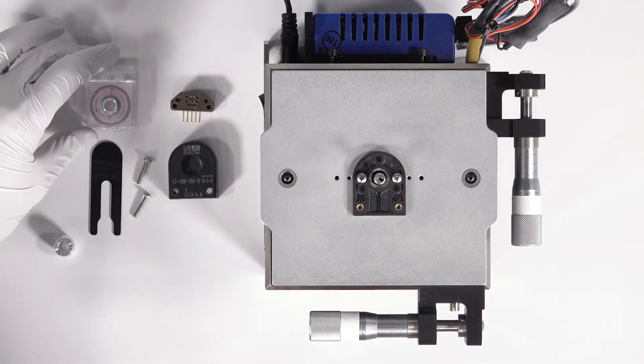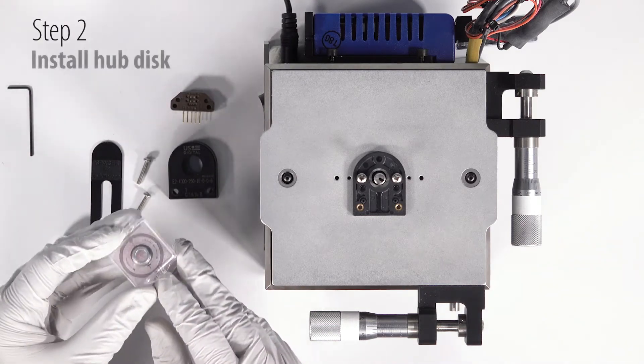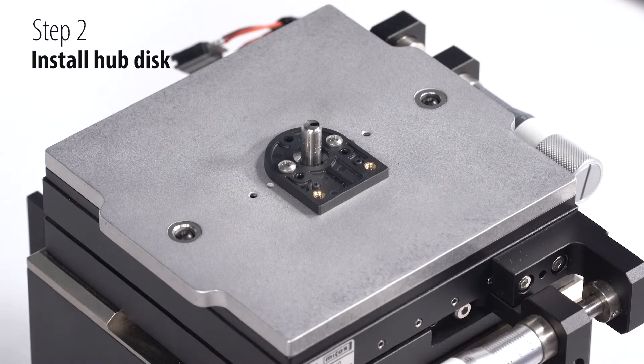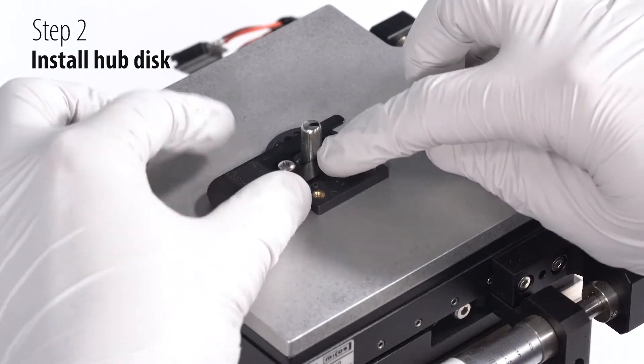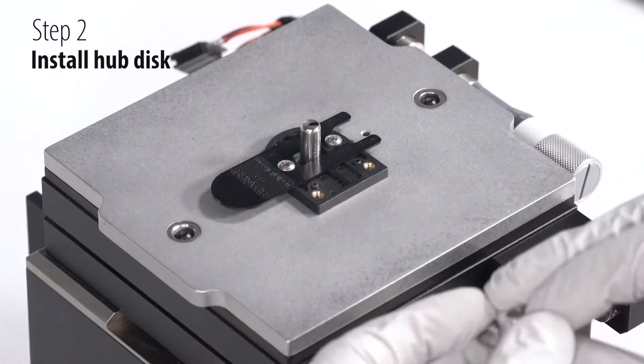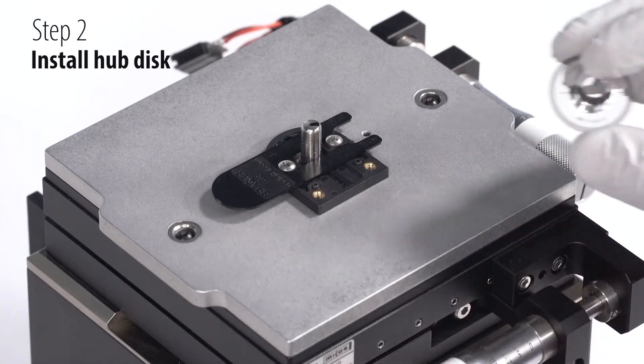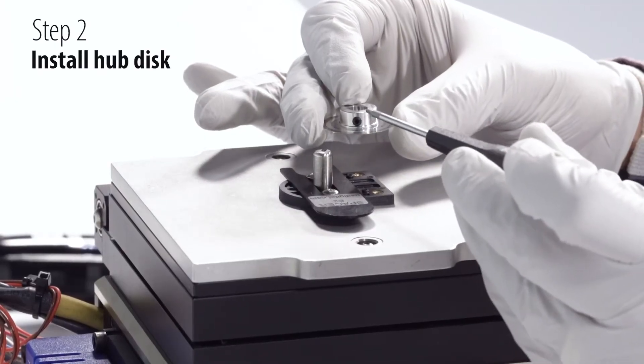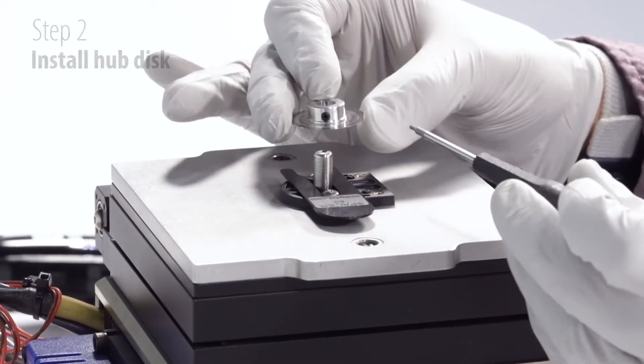In step two we will install the hub disk assembly. I'll be using the spacer tool, applying it to the mounting base to set the gap for the disc. The E2 will use the hub disk assembly with the set screw located above the disc.